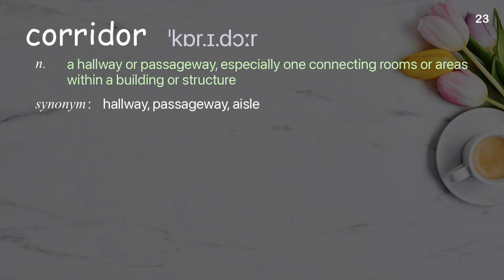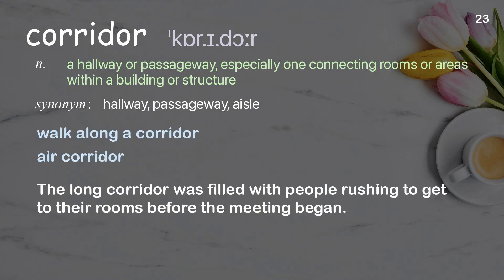Corridor: a hallway or passageway, especially one connecting rooms or areas within a building or structure. Examples: walk along a corridor, air corridor. The long corridor was filled with people rushing to get to their rooms before the meeting began.